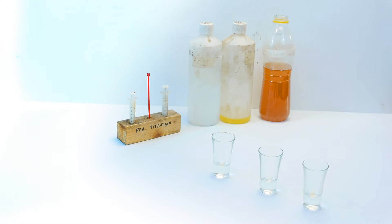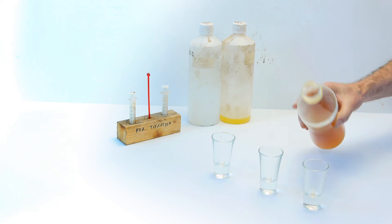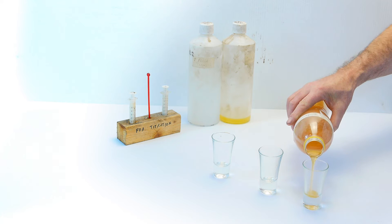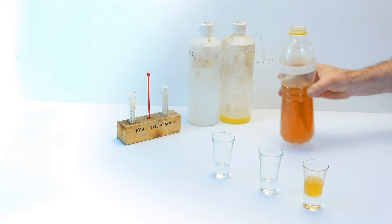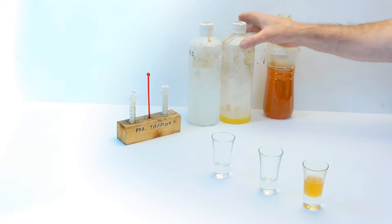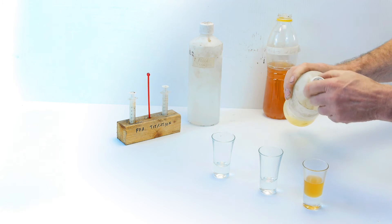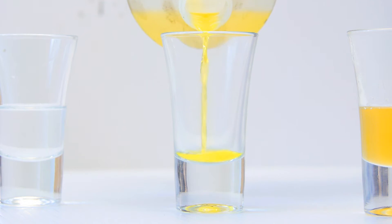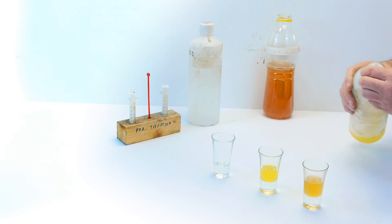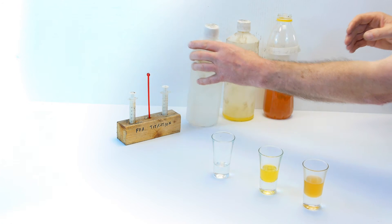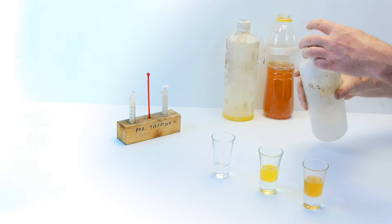To perform the titration, first lay out your glasses in the order you see them there. Fill the first one with vegetable oil that you want to test. The second one, about half fill the small glass with the yellow indicating fluid. Next, fill up the third glass with clear titration fluid.